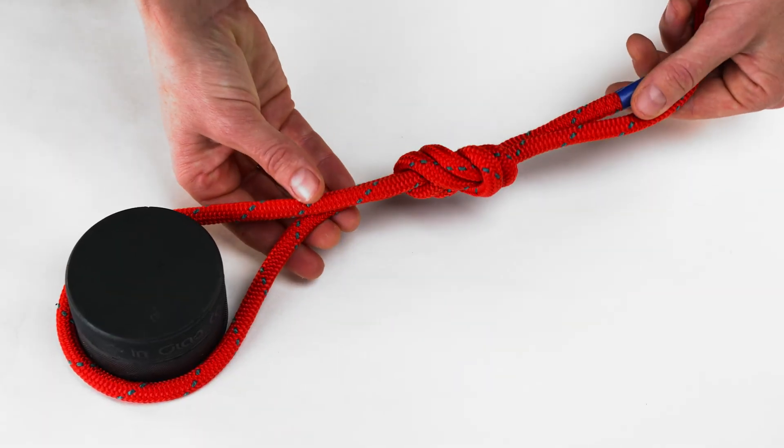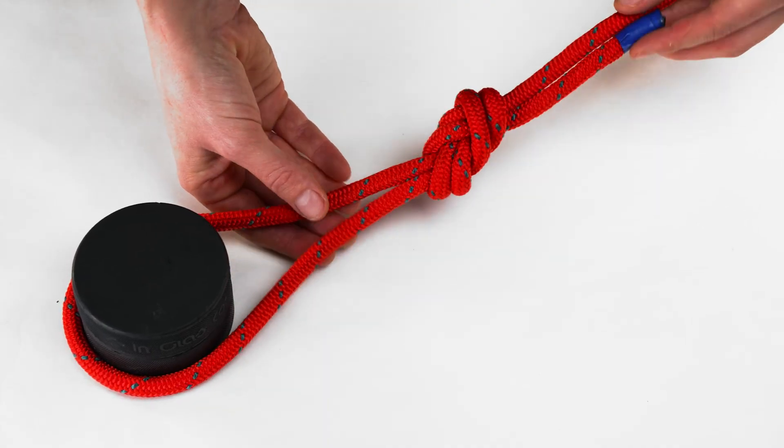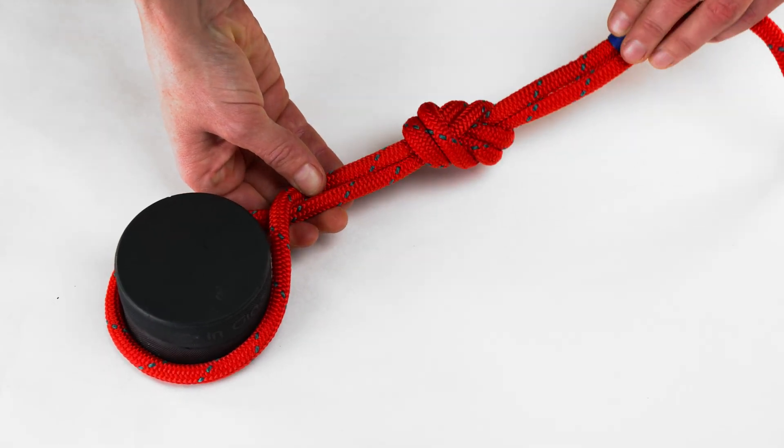This knot allows a loop to be made at the end of a rope around an object such as a tree or post when a figure of eight on a bike cannot be tied. It is commonly used in anchor applications.